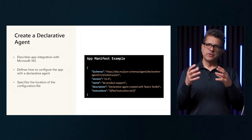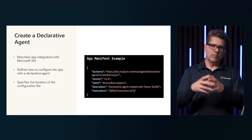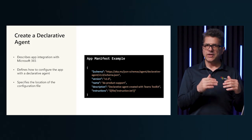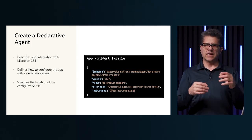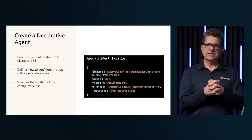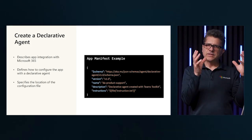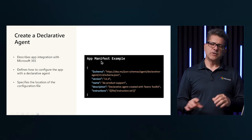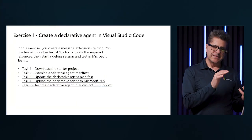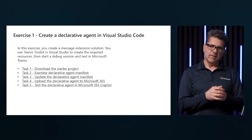When we look at the configuration, after we do the initial setup or bring in the package, we are going to open the manifest in the declarative agent JSON. In the JSON, I can see icons, color palettes, documents I can access, the name of my declarative agent, and conversation starters. In the first exercise, we are going to download the package from GitHub and then examine the declarative manifest.